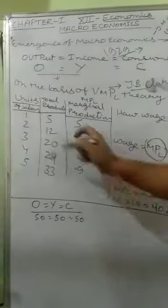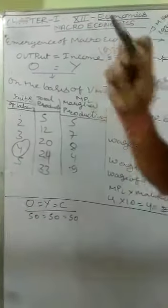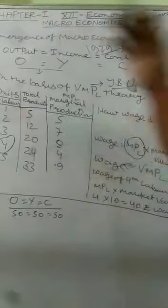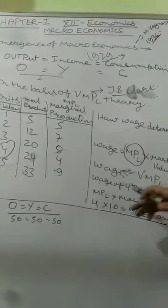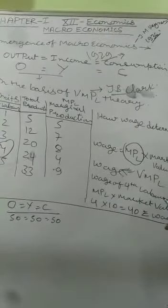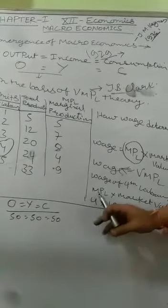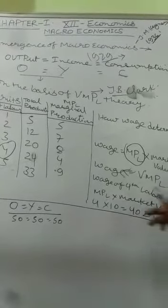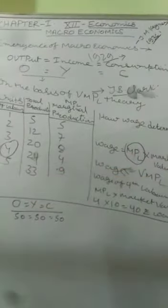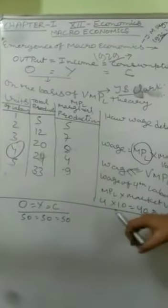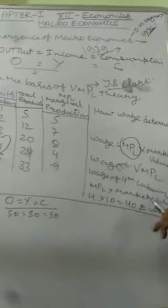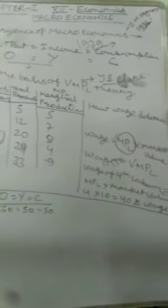Suppose fourth labor's marginal productivity is 4, and the chair sells in the market for 10 rupees, then 4 into 10 equals 40 rupees. So the fourth labor's wage is 40 rupees, neither more nor less.